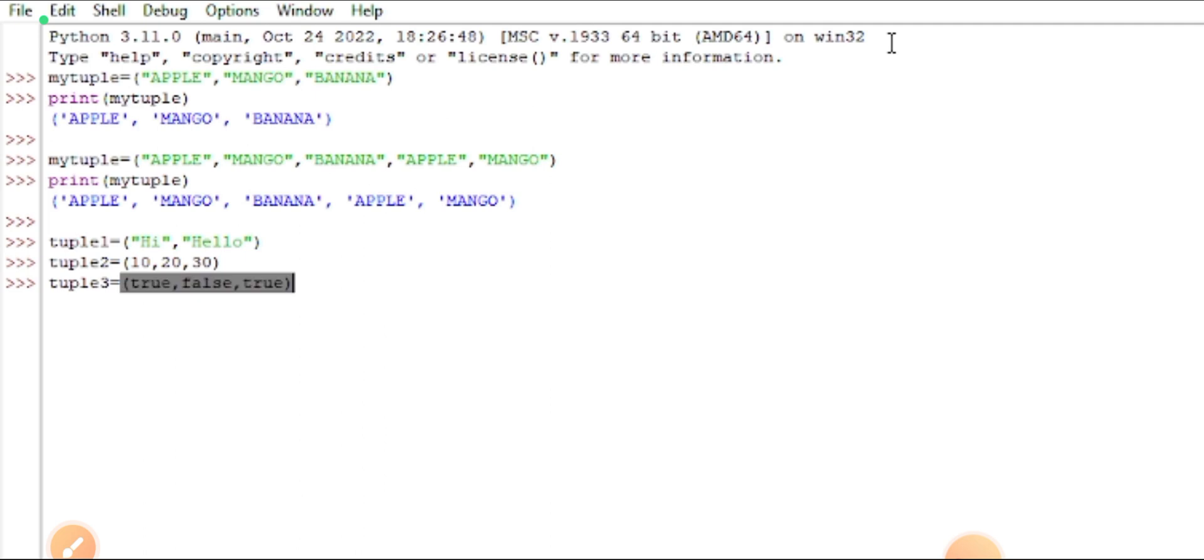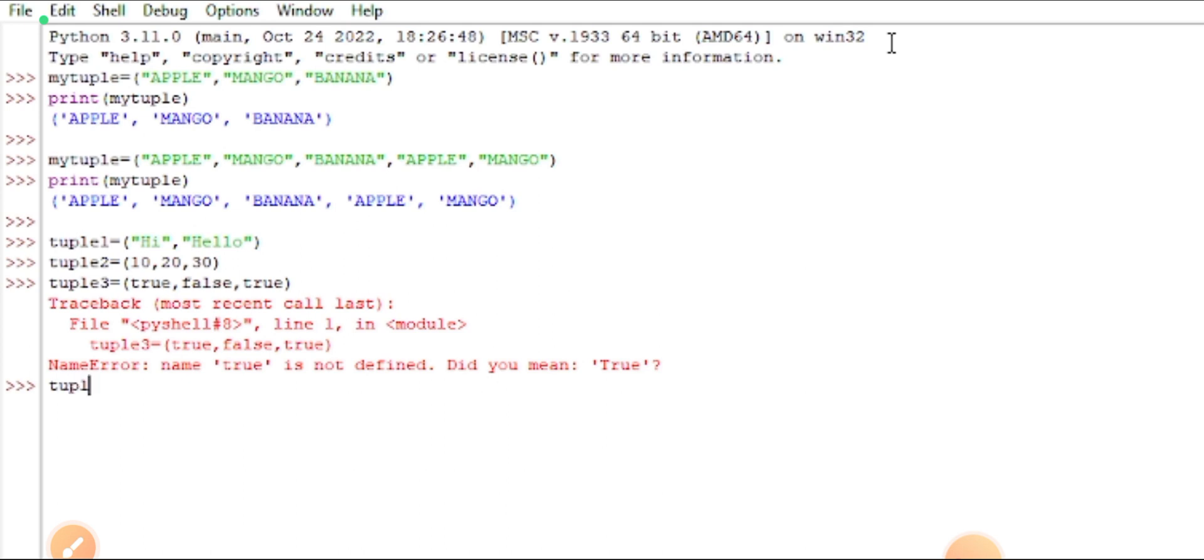Tuple 3 is equals to boolean data types: true, false, false. Here error will be displayed. I will show you. Yes, why? Because let us see what is the mistake. The tuple 3 is equals to, you must write T as capital T-R-U-E comma, F capital.